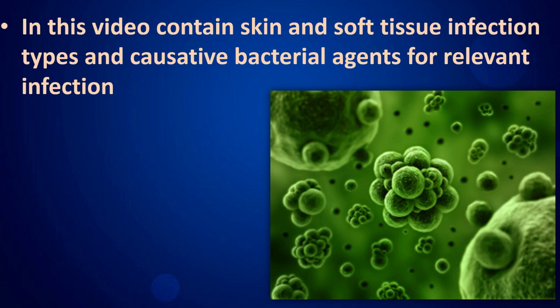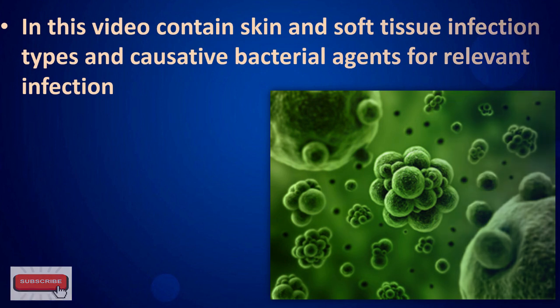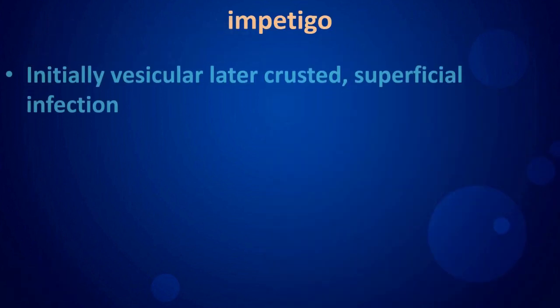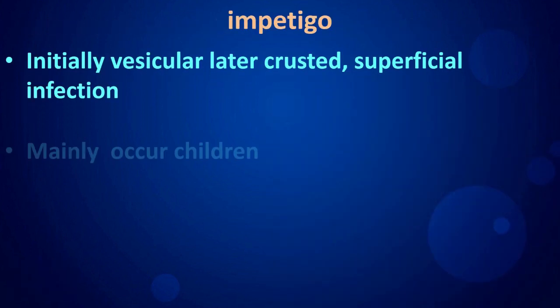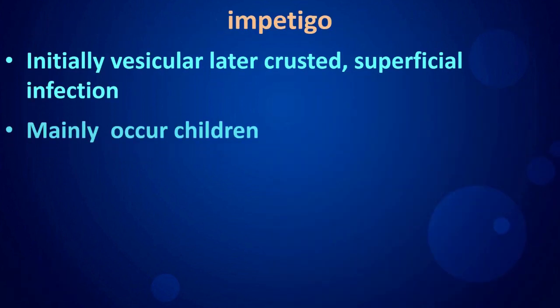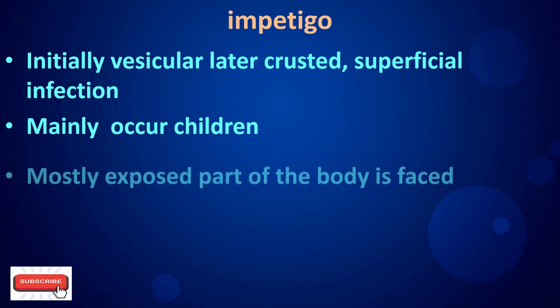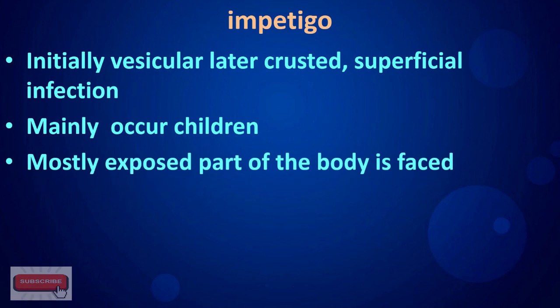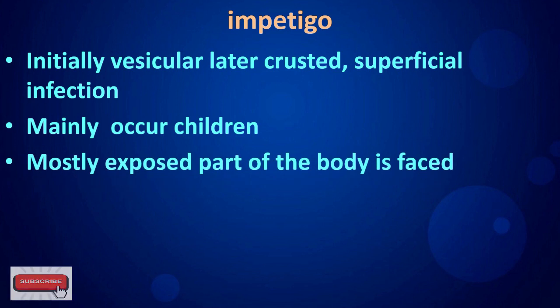Impetigo is initially vesicular and later crusted. It is a superficial infection that mainly occurs in children, with the most commonly exposed part of the body being the face.